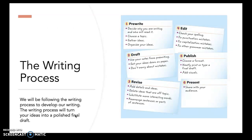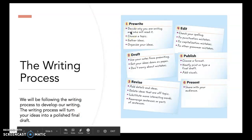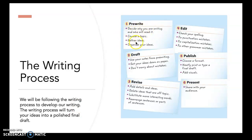We'll be following the writing process to develop our writing. The writing process is important because it helps turn our ideas into a polished final draft. We will start with the pre-writing stage, where we're thinking about our ideas, brainstorming and creating a mind map or any type of way to organize and gather ideas. Then you'll create a first draft, revise and edit, get feedback from your teacher, and finally complete your final draft.